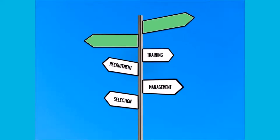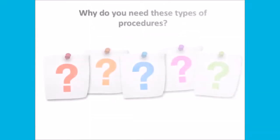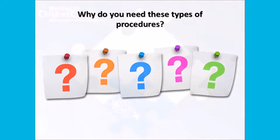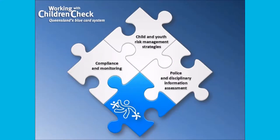It may be useful to group the processes into pre-appointment and post-appointment. You may be wondering: why do we need to have these types of procedures? Well, working with children checks are most effective when supplemented by child-focused recruitment policies within the organization itself. As discussed in the introductory video, the blue card system is made up of three elements.